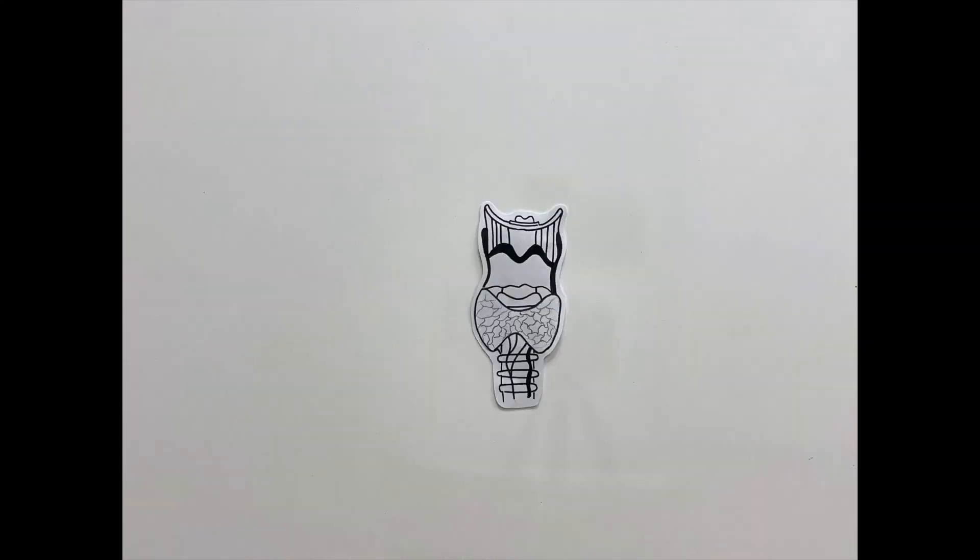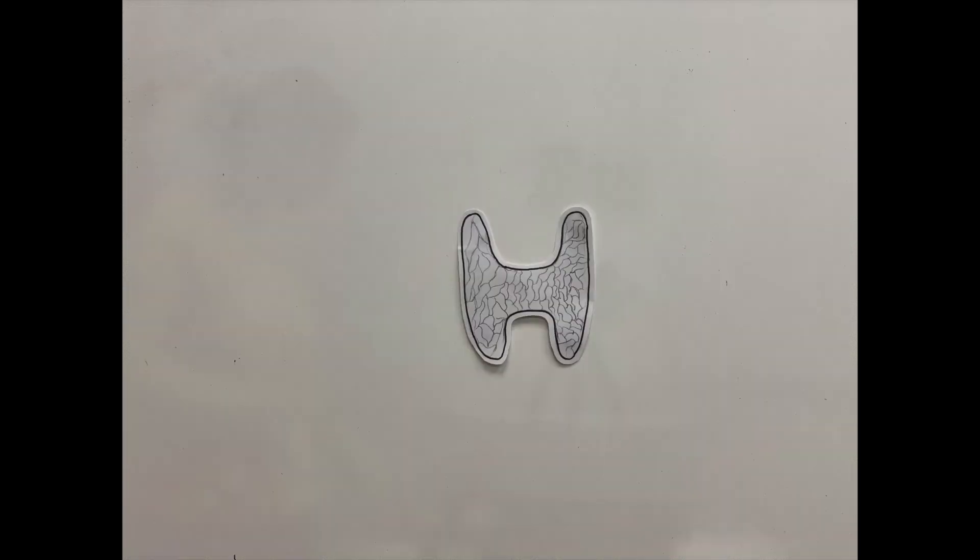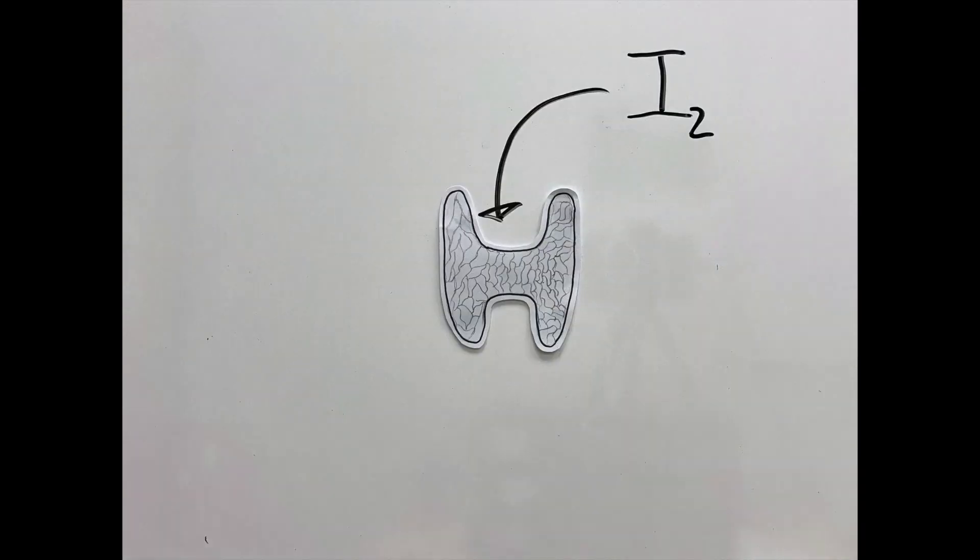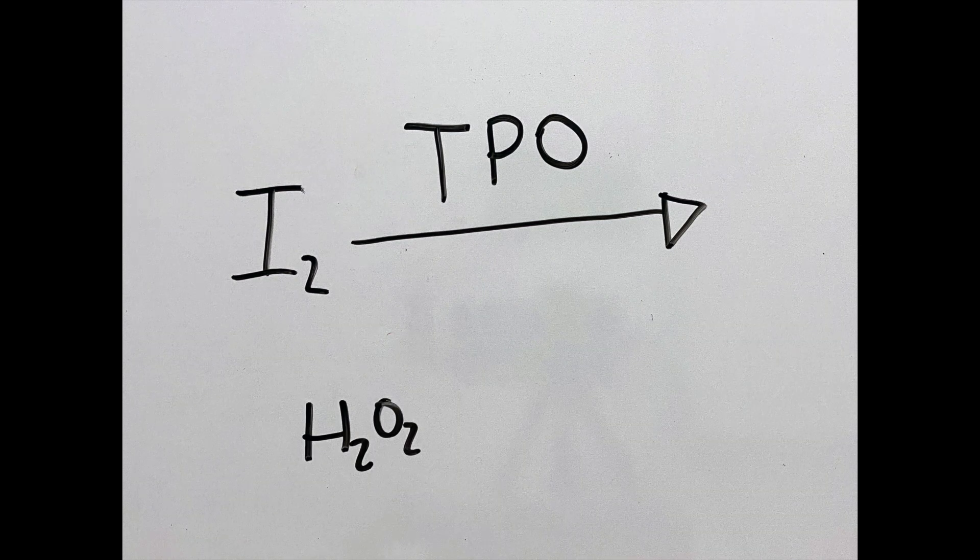The major thyroid hormones T3 and T4 are formed in the following pathway. Iodine is absorbed and transported to the thyroid tissue, called follicular cells. In the follicular cells, the iodine becomes oxidized by TPO, or thyroid peroxidase enzyme, to form iodide. This is done with the use of H2O2.